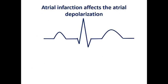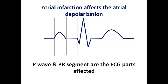Let's look at this ECG example. Atrial infarction results in infarction of the atrial myocardium, so by logic, the affected parts of the ECG would be the P wave — which represents atrial depolarization — followed by the PR segment. These are the parts of the ECG affected in atrial infarction, whereas the QRS complex, ST segment, and T wave are affected as a result of ventricular infarction, not atrial infarction.